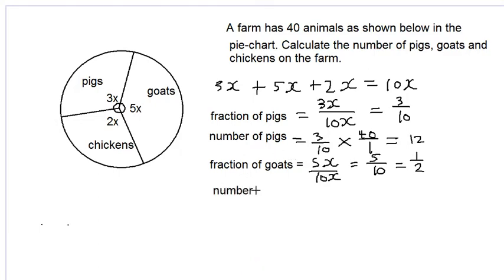So the number of goats will then be equal to 1 half multiplied by the total of 40. 2 into 40 is 20 and so we have 20 goats. So we know the number of pigs is 12 and the number of goats is 20.